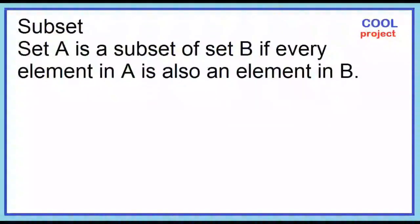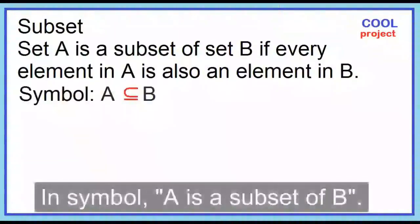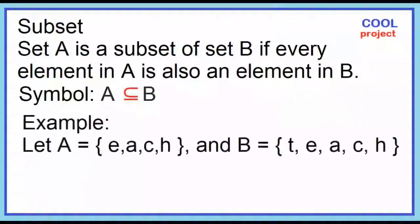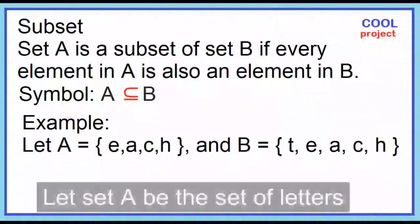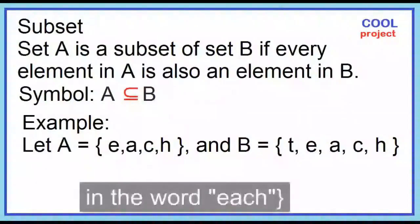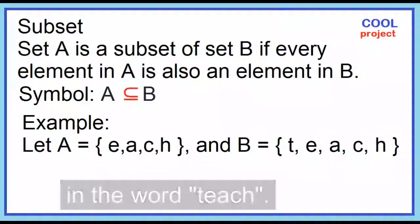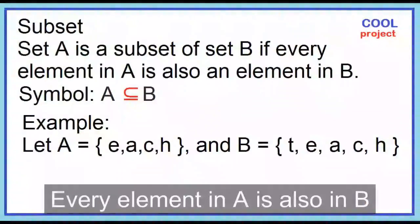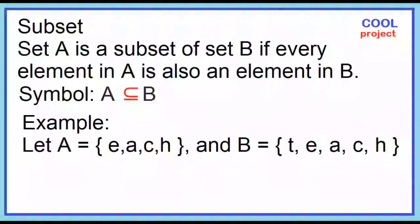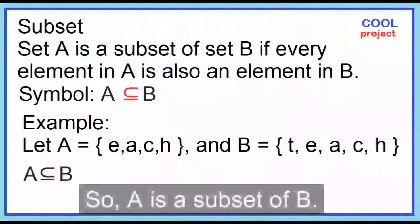Set A is a subset of set B if every element in A is also an element in B. In symbol, A is a subset of B. Example: Let A be the set of letters in the word 'each' and B be the set of letters in the word 'teach.' Every element in A is also in B, so A is a subset of B.